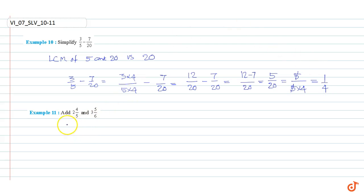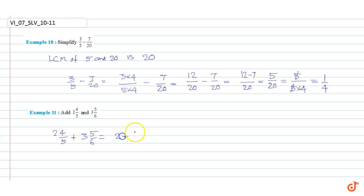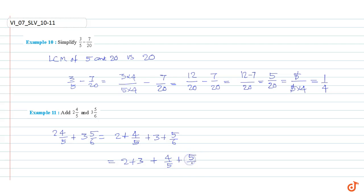Now add 2⁴⁄₅ plus 3⁵⁄₆. This equals (2 + 4/5) plus (3 + 5/6), which equals 2 plus 3 plus 4/5 plus 5/6.